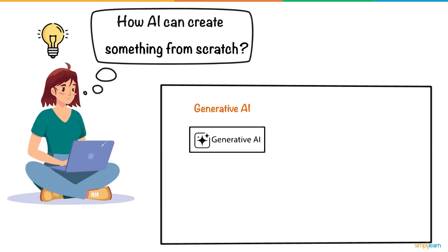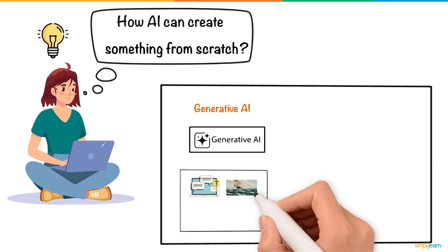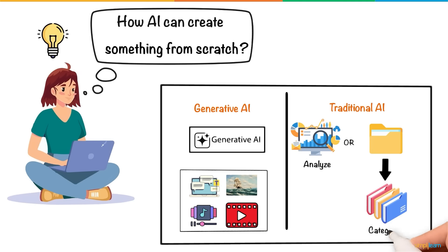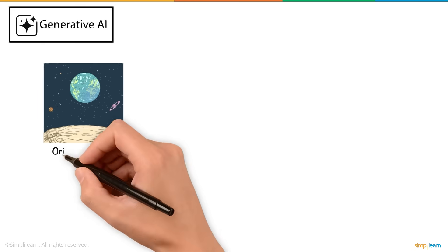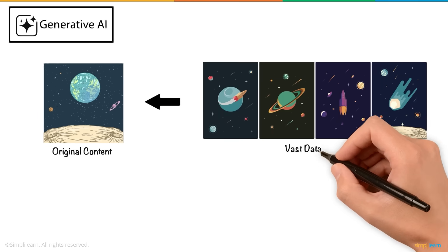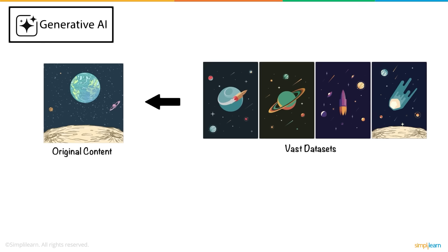Generative AI refers to a type of artificial intelligence designed to create new content, such as text, images, music, and videos. Unlike traditional AI, which analyzes or categorizes data, Generative AI produces original content based on patterns learned from vast datasets. Essentially, it generates new, unique material.